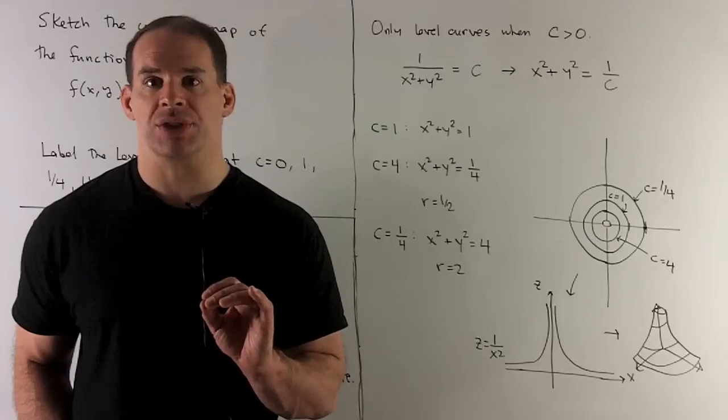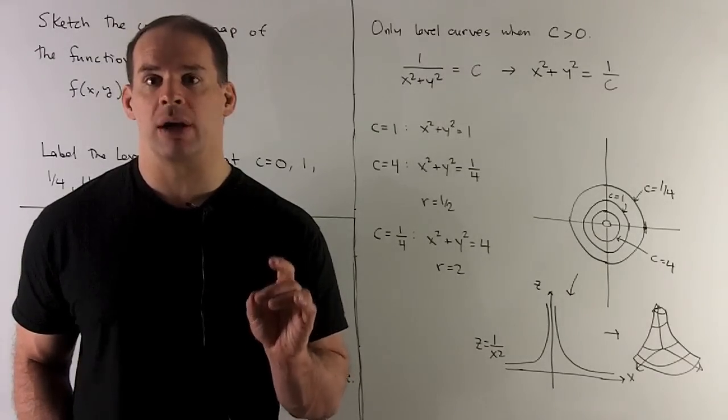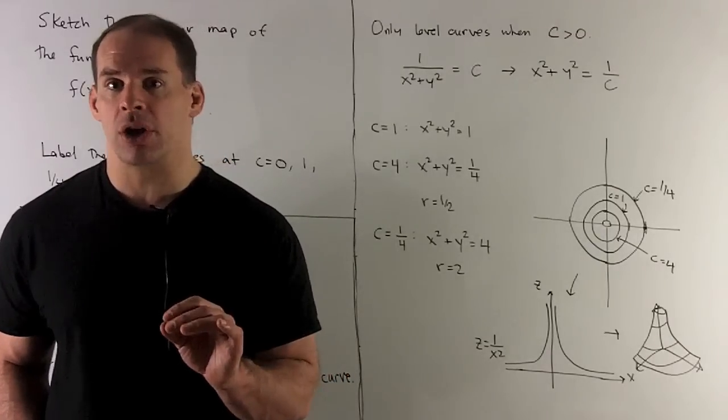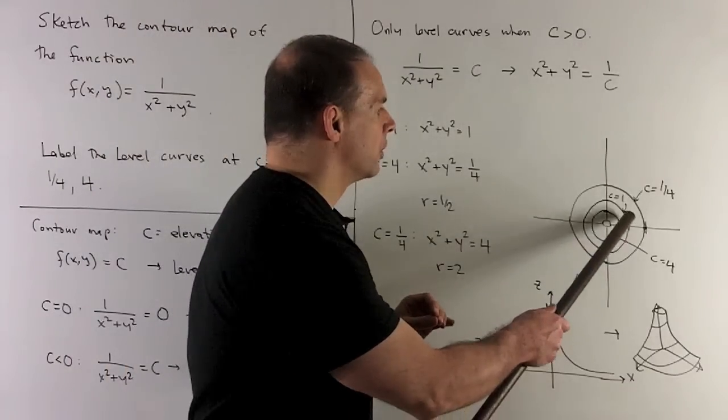Let's put a few numbers into this. First one: in this case we're looking at x² + y² = 1. That's going to be the unit circle, so I'll draw that on my contour map. We have c = 1 right there.